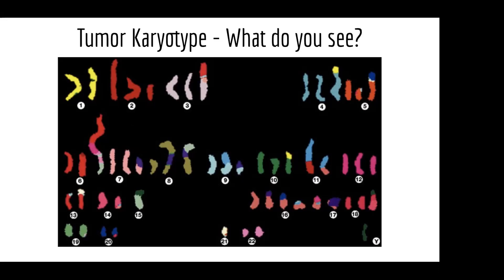Does anyone see anything unexpected or different from what you might expect, given what you know about normal cells? Anyone can unmute or write something in the chat to share an observation.